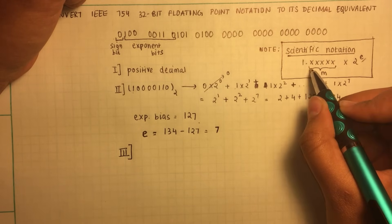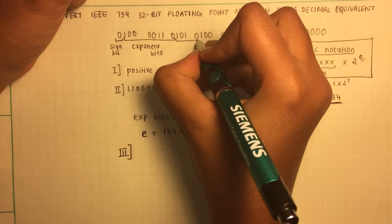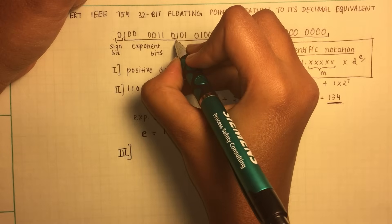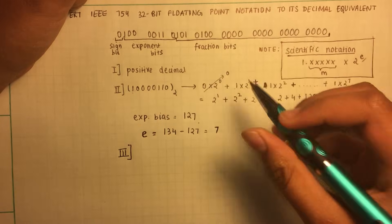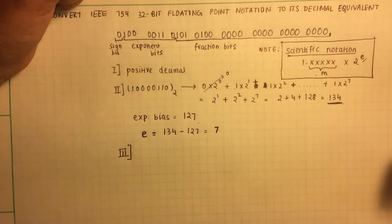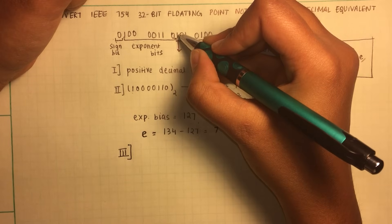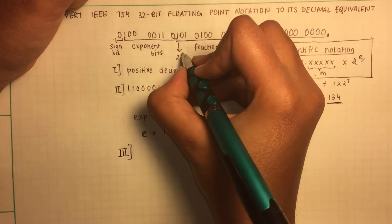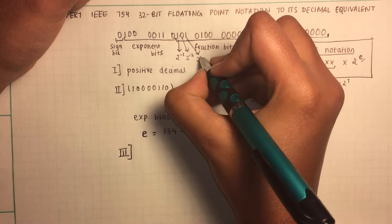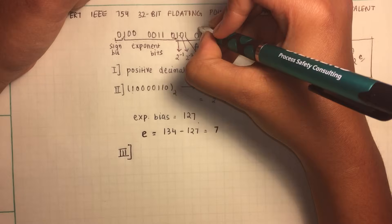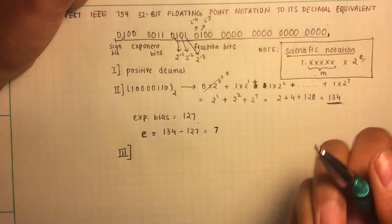Now, the third part is to figure out the mantissa of the number in the scientific notation. And the fraction bits — those are the remaining bits left in the 32 bits. These are the fraction bits. This helps us figure out the mantissa. So what we are going to do is multiply each bit by a certain number. You multiply the first bit, that's 1, by 2 to the negative 1. You multiply the second bit by 2 to the negative 2. You multiply the third bit by 2 to the negative 3. And the fourth bit by 2 to the negative 4. Fifth bit by 2 to the negative 5. And so on. Then you add them all up to find the mantissa.